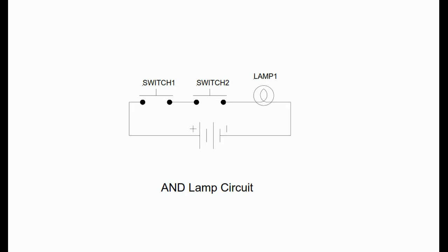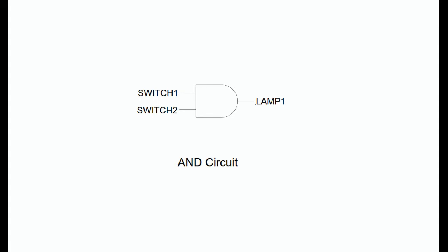Figure shows the actual wiring connection for two switches, a lamp, and a battery in an AND configuration. The lamp, lamp one, will illuminate only when switch one and switch two are on. The boolean expression for this is lamp one equals switch one multiplied by switch two.